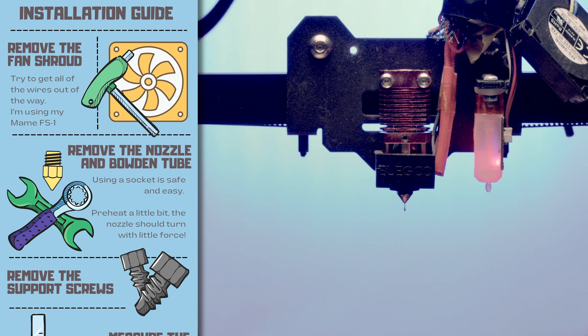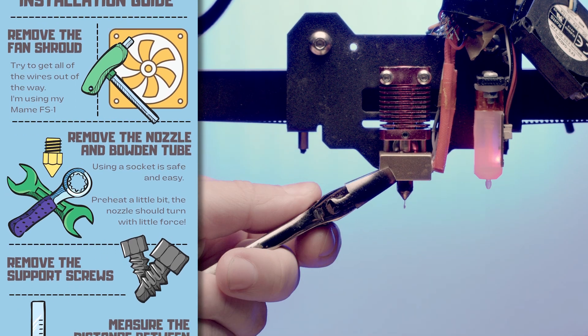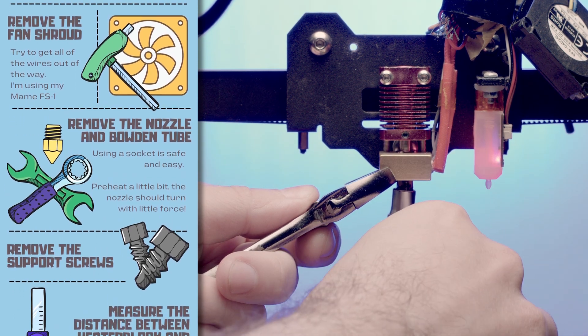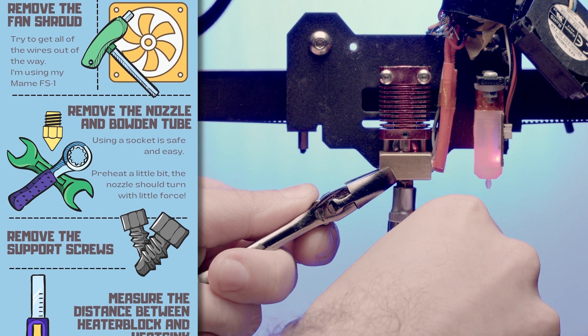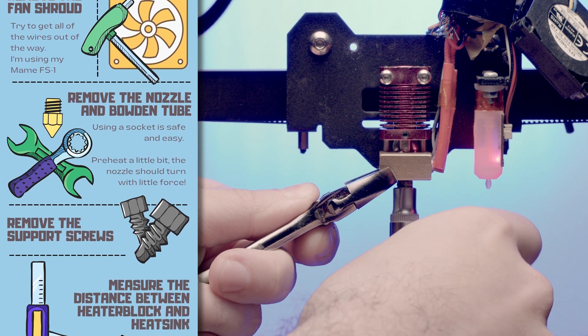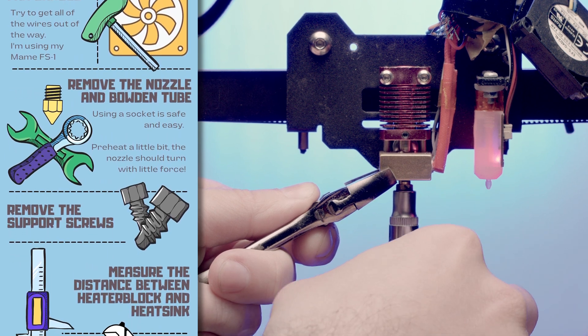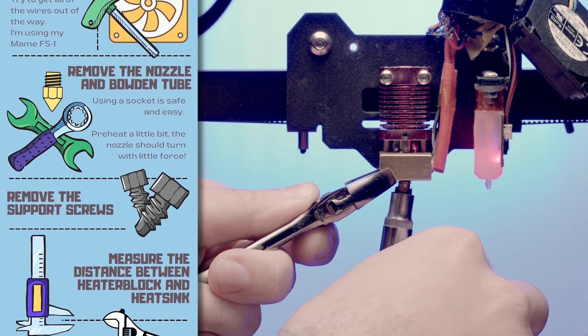I turn on the machine and move the motors so that they lock in place. I also preheat a little bit to make it easier to work. It's a lot easier and safer to take the nozzle out with a socket.